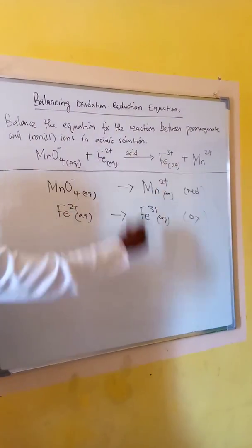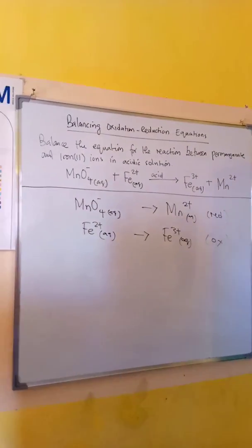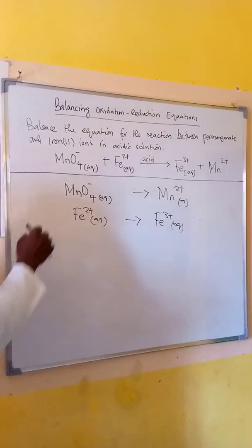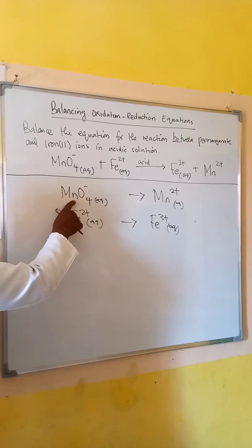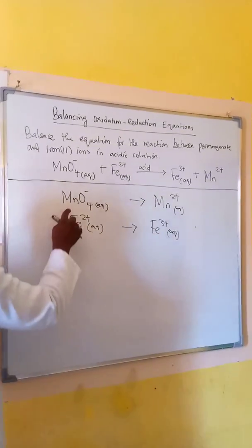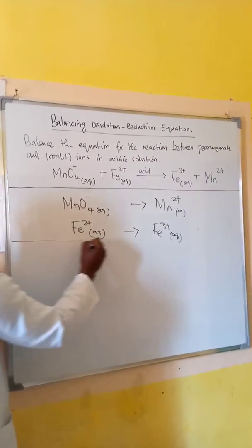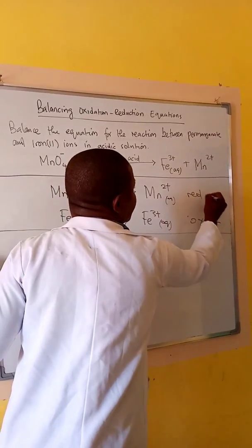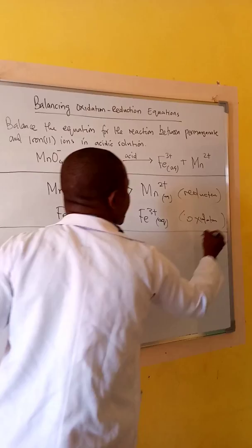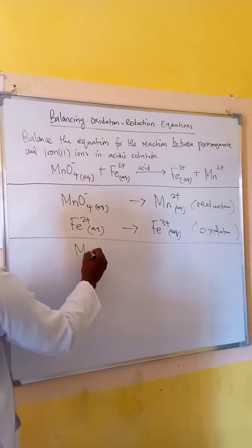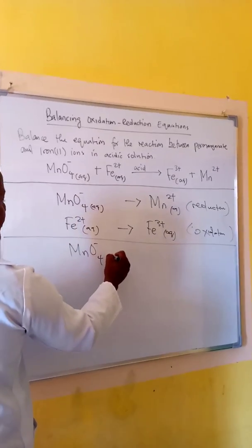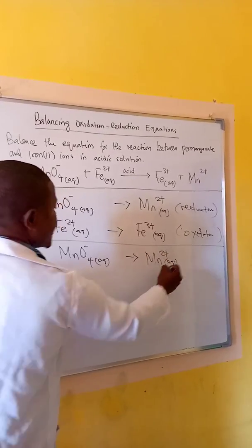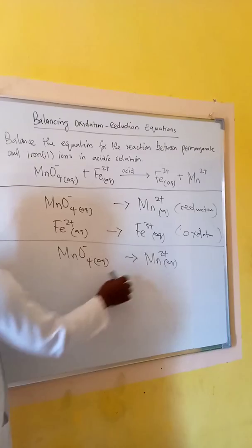Automatically, if one is oxidation, the other one is reduction. The first step is to balance the atoms except hydrogen and oxygen. For reaction number one, the reduction half-reaction: we have one manganese on the left and one manganese on the right, so this is already balanced.